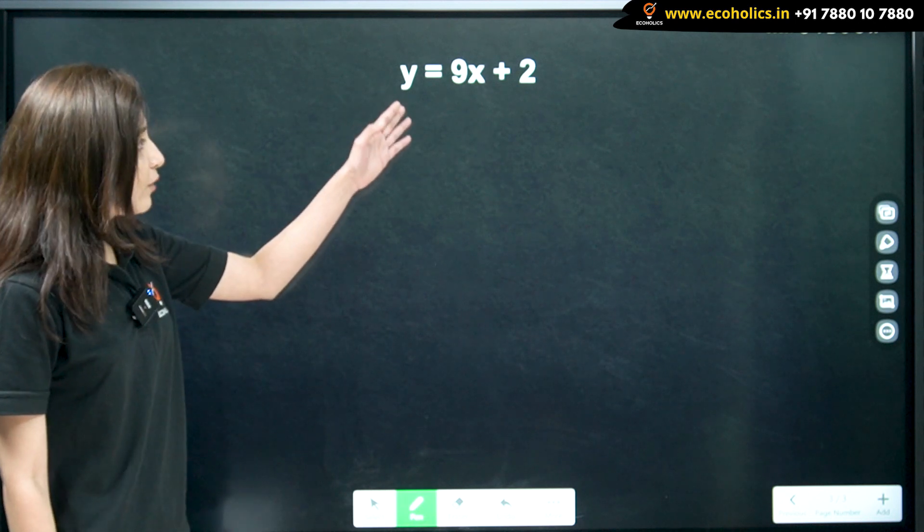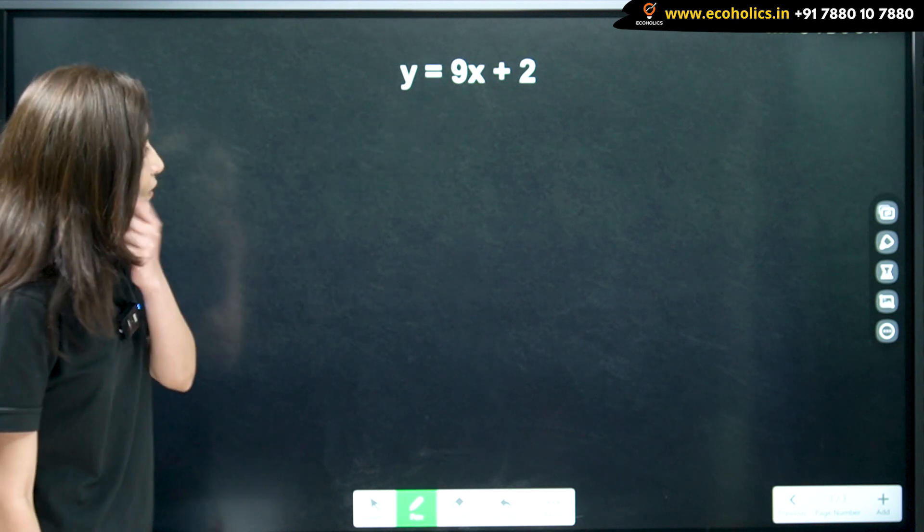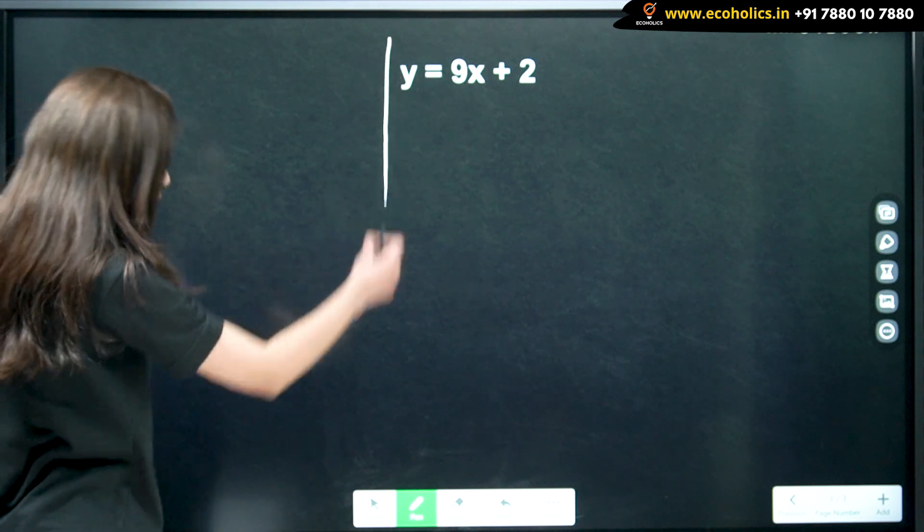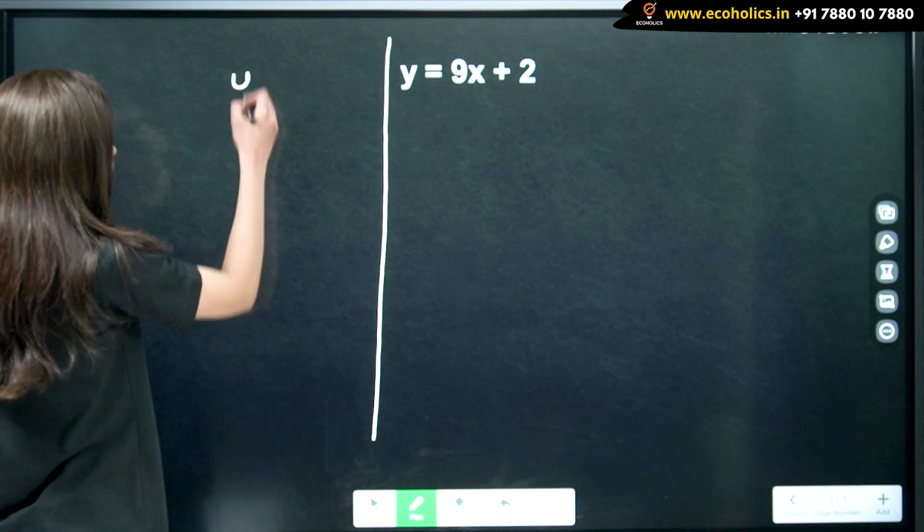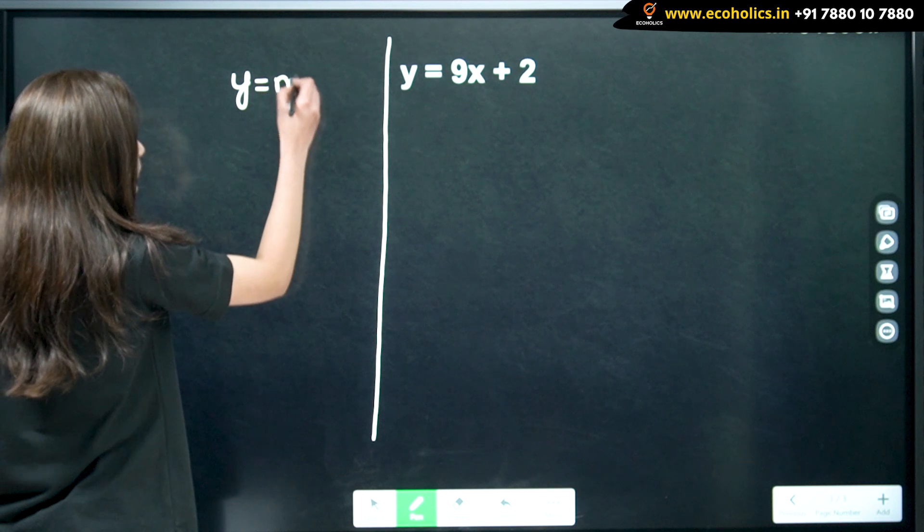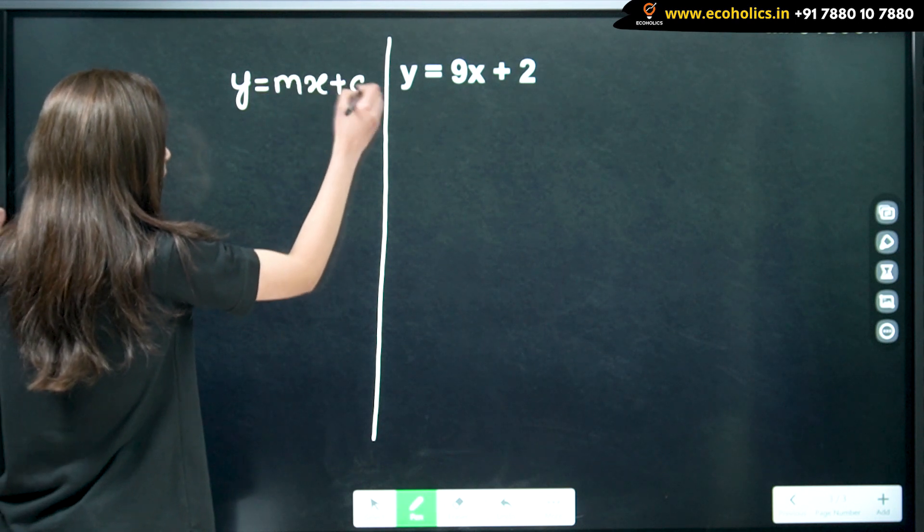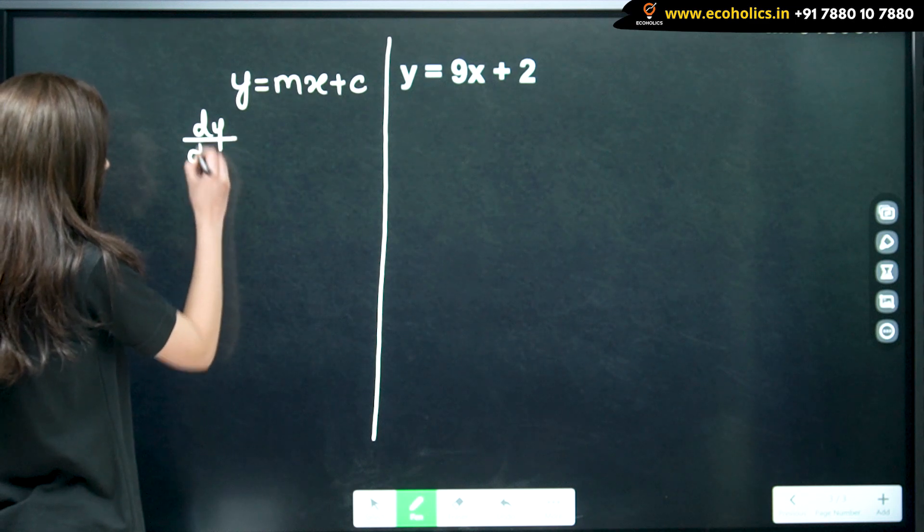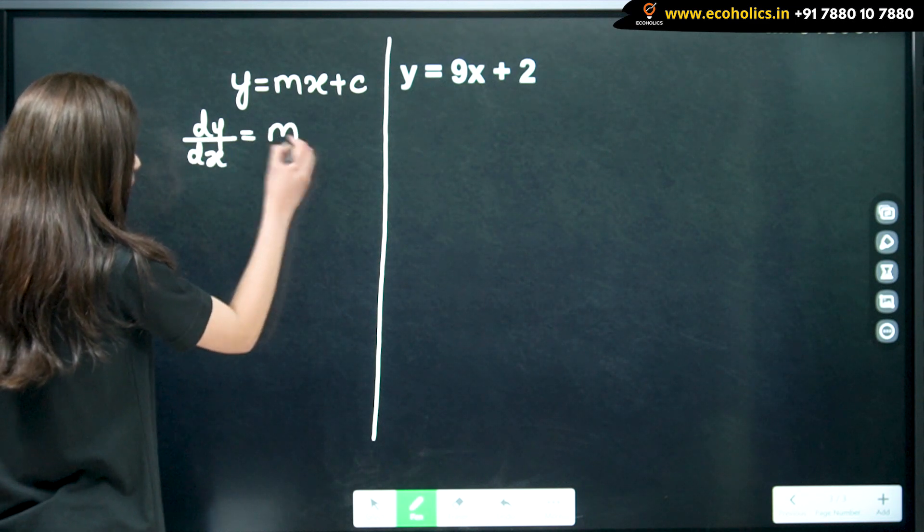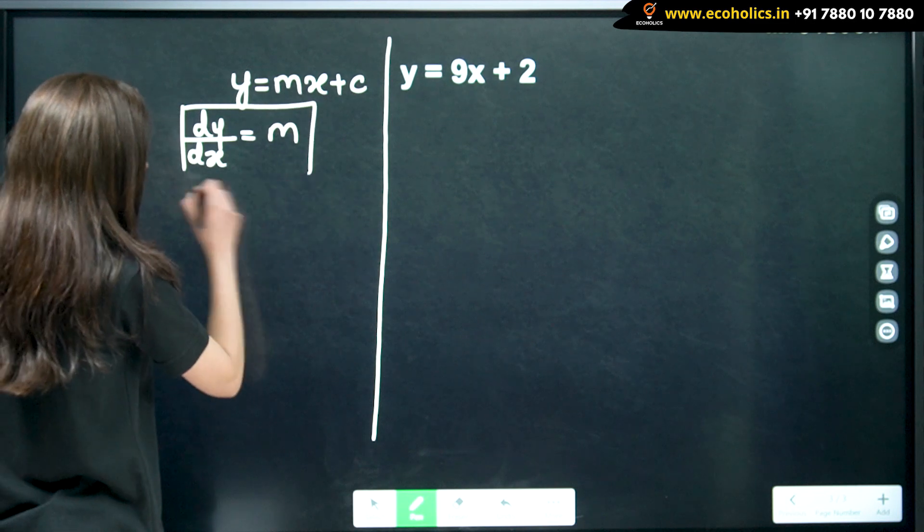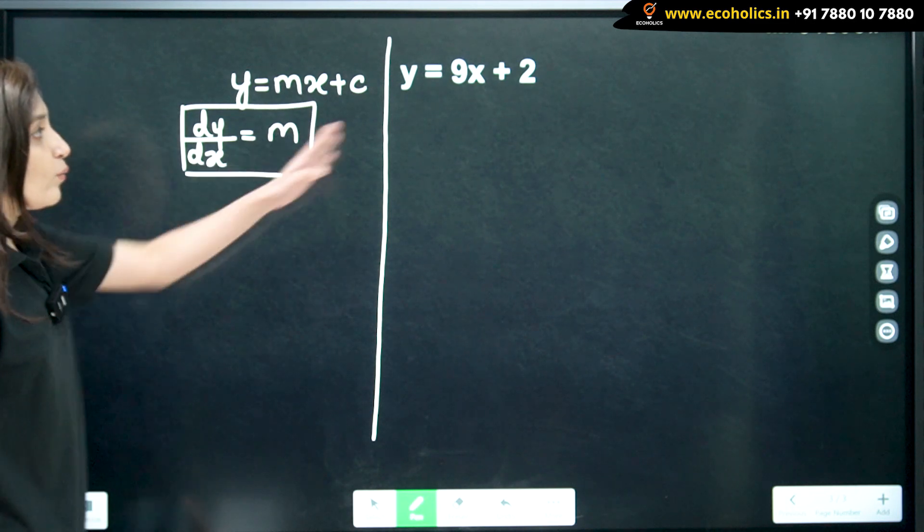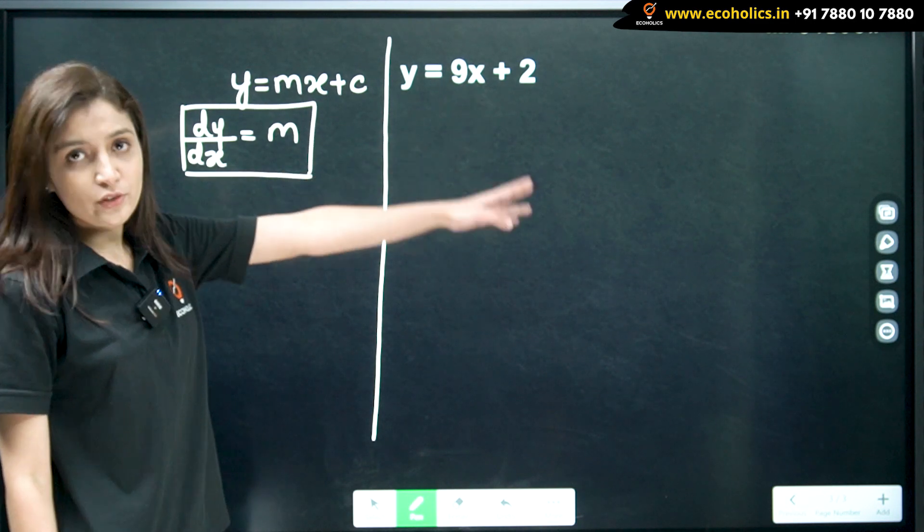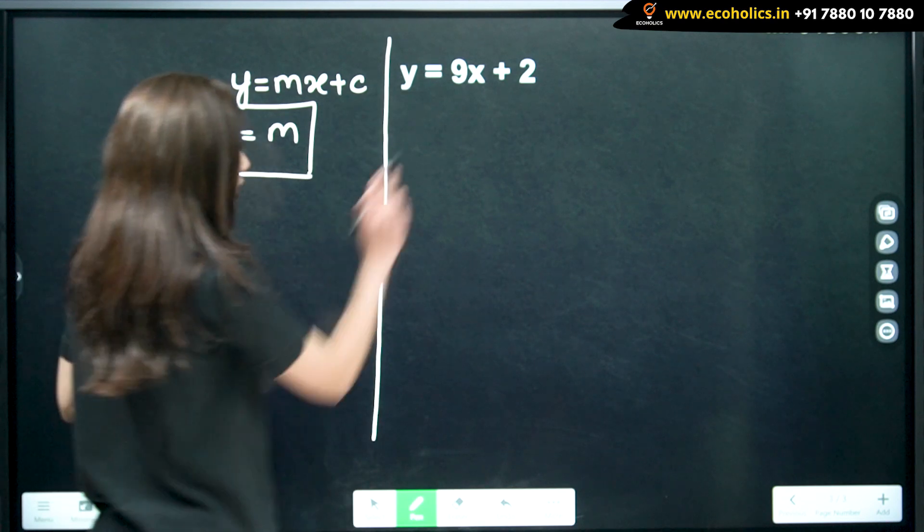So, we have y is equal to 9x plus 2. Using the formula, using rule 3 that is dy by dx is equal to m. In this case, y is equal to 9x plus 2. How do we calculate this?